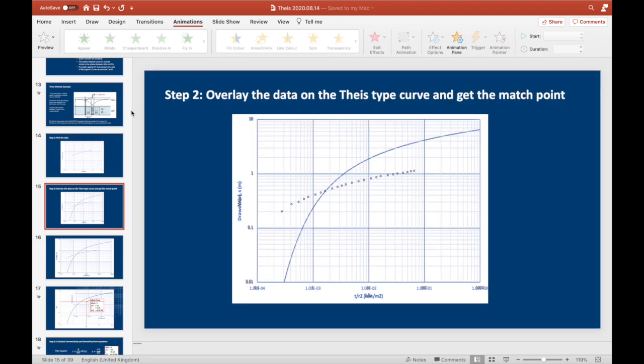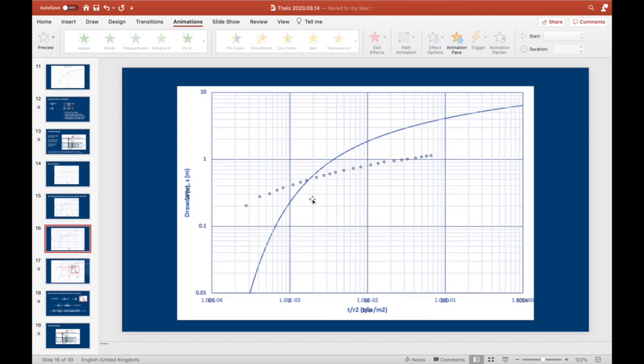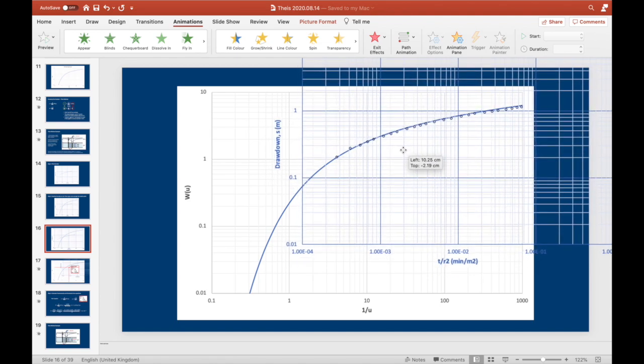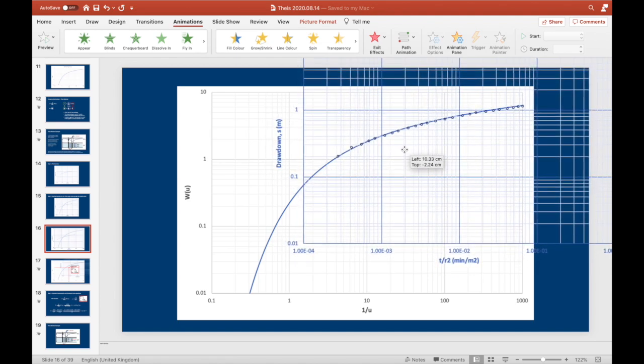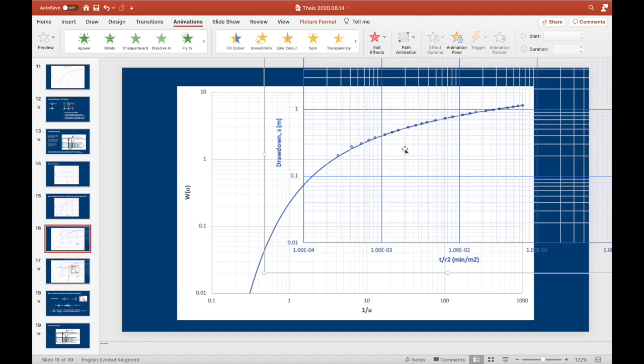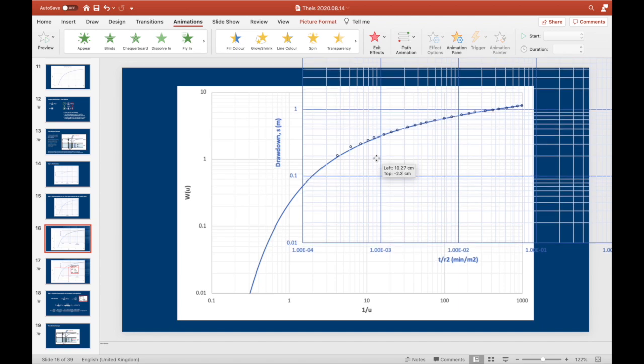And if I make it slightly bigger like this maybe that will work. So this is what I used to do 30 years ago. We would match the data onto the type curve. And it requires a little bit of skill but something like this will have a nice fit. So basically what we'd like to see is that all our data points fit nicely onto the Theis curve. Sometimes the very early data doesn't fit because of well bore storage effects. So don't worry too much if maybe this very early data doesn't seem right as long as the other data points plot nicely on the type curve it's okay.